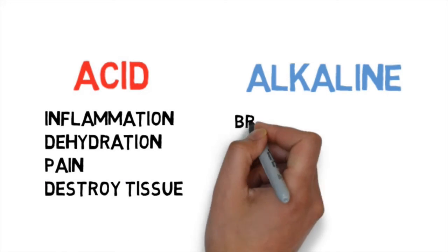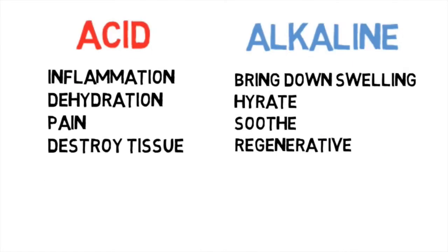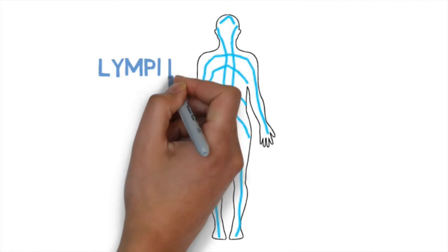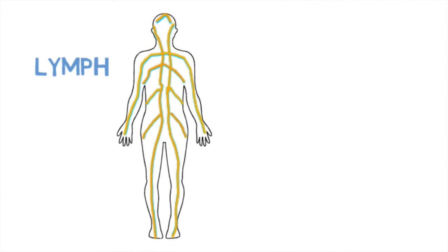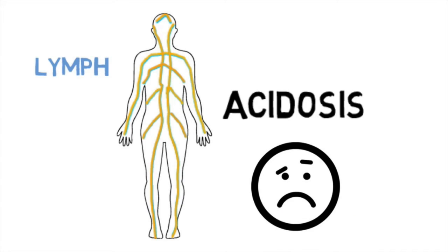Alkalines are anti-inflammatory, hydrating, cooling, and replenishing. Lymph is our sewer system and it surrounds every cell. When it backs up, it turns to acid. This is called acidosis and it's the cause of most of man's suffering. Everything from canker sores to cancer.